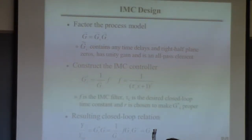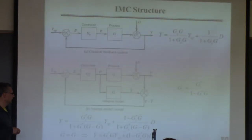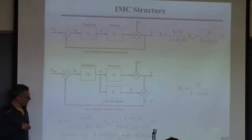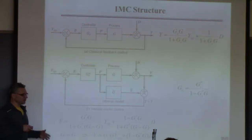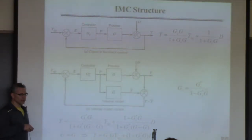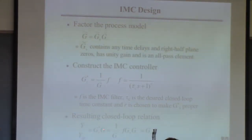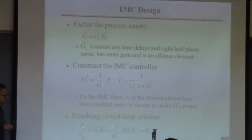Tau_C is the closed-loop time constant, same as before. R is required to make the controller implementable. The way to interpret this equation: you plug into this, and F here is just GD, and almost always it'll be 1 over (tau_C * s + 1) with R = 1. I'm not worried about the disturbance — I'm just interested in what the response is going to be to set point changes.